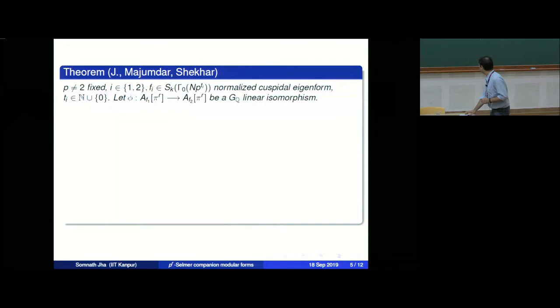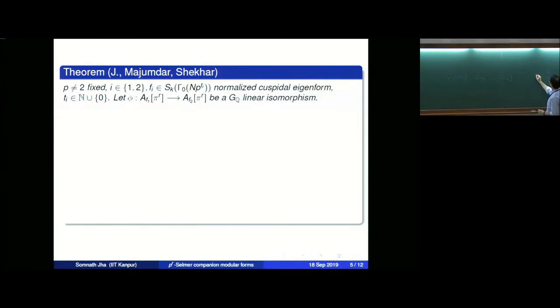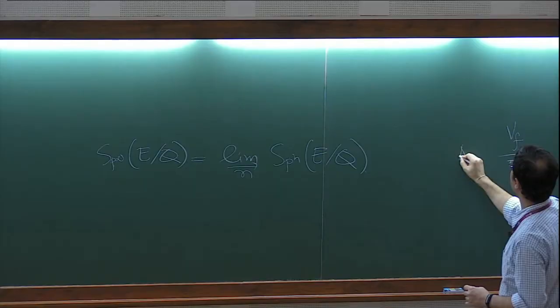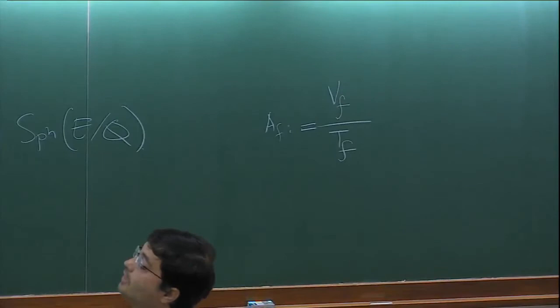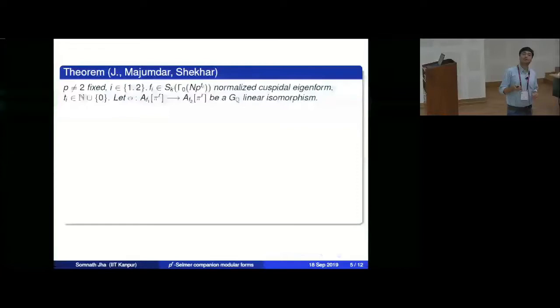Given a modular form, using the Galois representation one gets a vector space V_f, and inside this by compactness there is a lattice T_f. The discrete module is defined by A_f = V_f/T_f — this is something like two copies of Q_p/Z_p, analogous to the E[n]-torsion points of an elliptic curve. We assume they are congruent: let Φ be a G_Q-linear isomorphism, and assume N is squarefree.